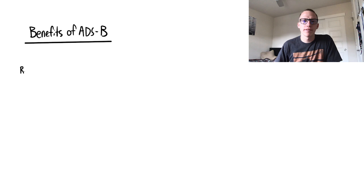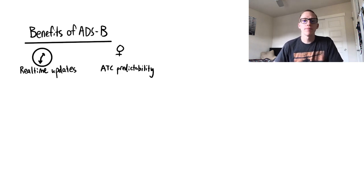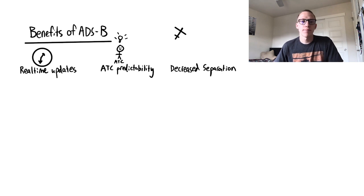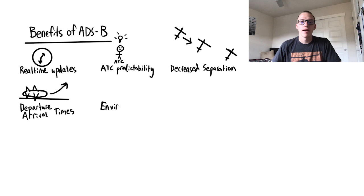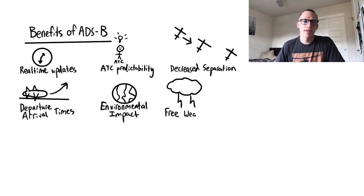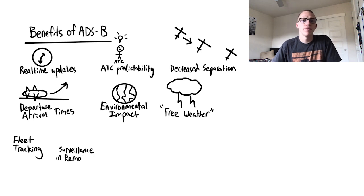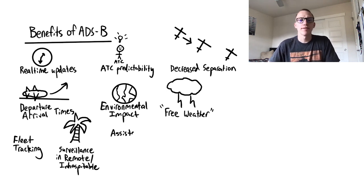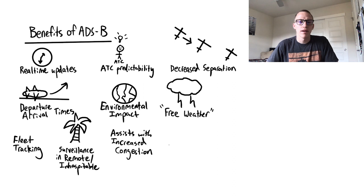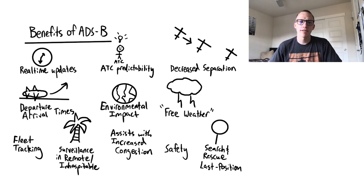ADS-B offers a wide range of benefits. Updates are considered real-time, providing ATC and pilots with more accurate pictures of traffic. With a clear picture, ATC predictability increases, so their separation can decrease. Departure and arrival times decrease, and environmental impact decreases. FIS-B gives general aviation pilots free weather. Operators can track their own fleets. Surveillance has become available in remote and inhospitable areas, such as Alaska, mountainous areas, or the Gulf. It assists with increased congestion, and general safety is increased. Lastly, Search and Rescue has more accurate last position info.